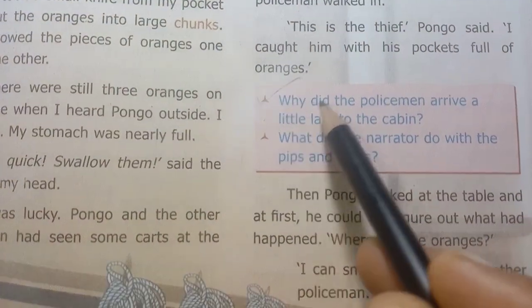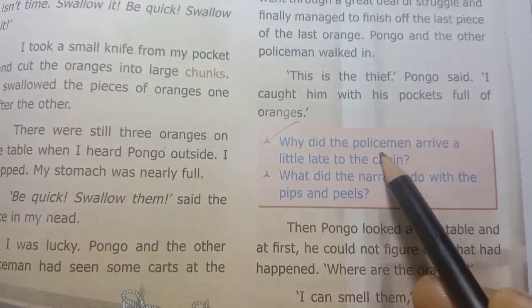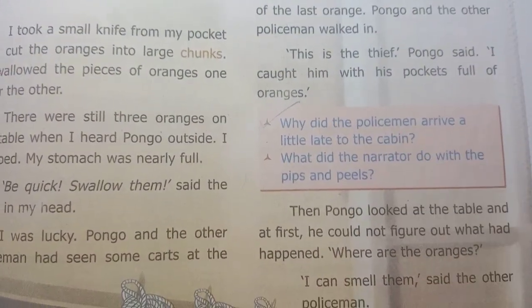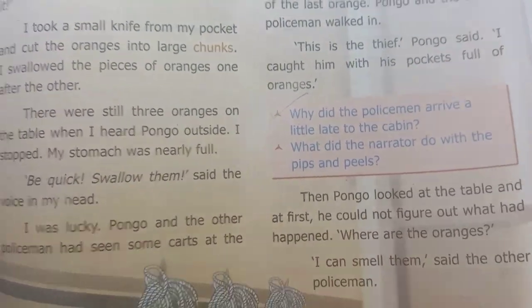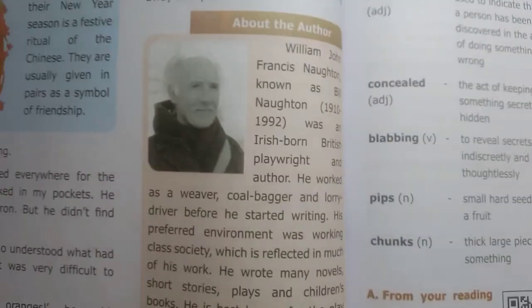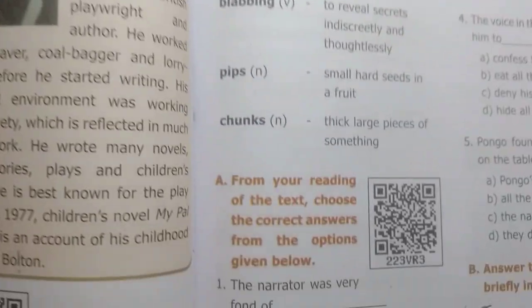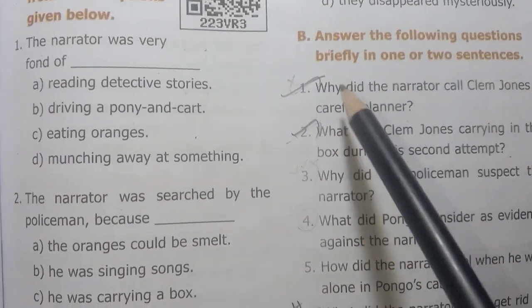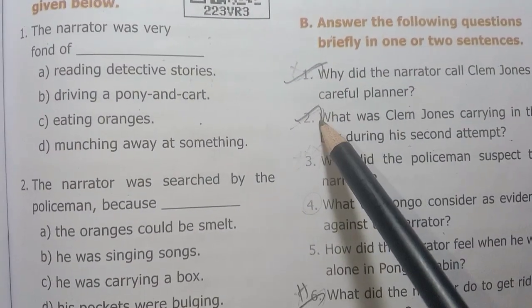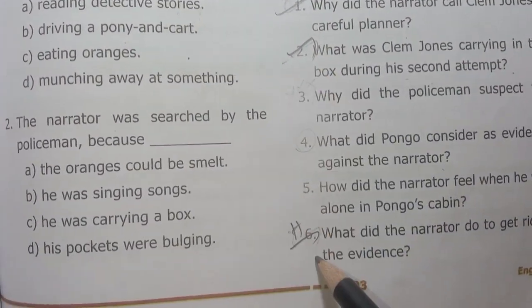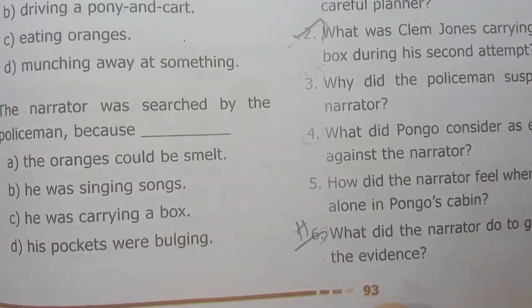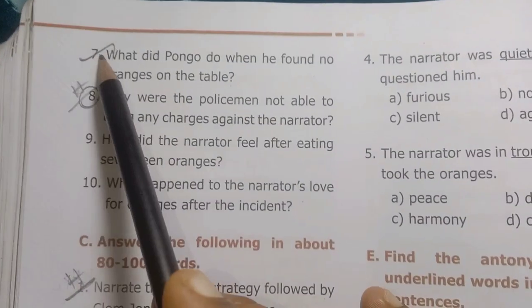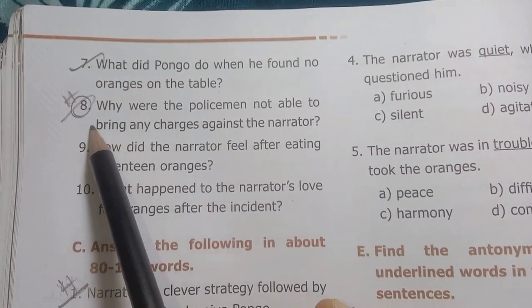Page number 91, first one: why did the policeman arrive a little late to the cabin? Important question. Page number 93 — first and second important question. Sixth one: previous year half-yearly question. Seventh one important.